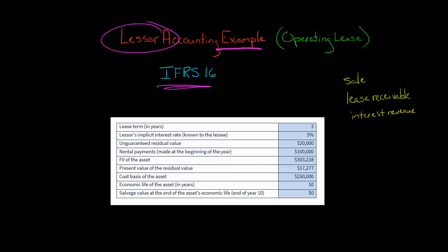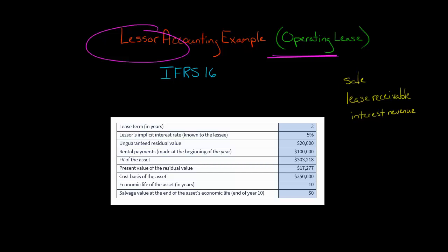We've done a couple of examples of how a lessor would account for a finance lease under IFRS 16, so let's look at an example for an operating lease. The difference between an operating lease and a finance lease is that with an operating lease, the lessor is not transferring substantially all the risks and rewards of ownership to the lessee. So they are going to retain the asset on their statement of financial position and record depreciation over its entire economic life, not just the lease term.